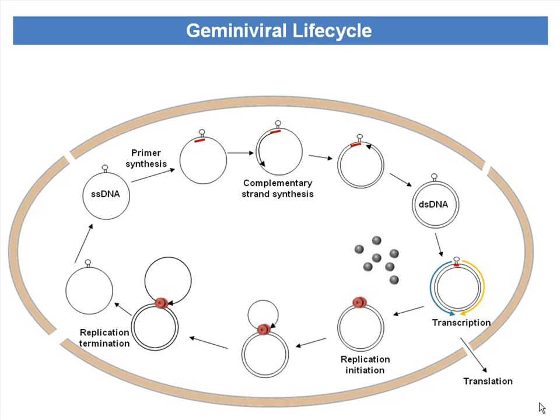This newly formed viral DNA participates in the same cycle of events until the viral DNA reaches a certain threshold. Once the DNA reaches the threshold level, it gets packaged by the movement proteins and the coat proteins of this virus, and then gets transported through the plasmodesmata to other cells, or through the insect vector to infect other plants.